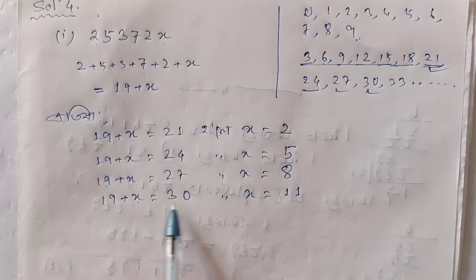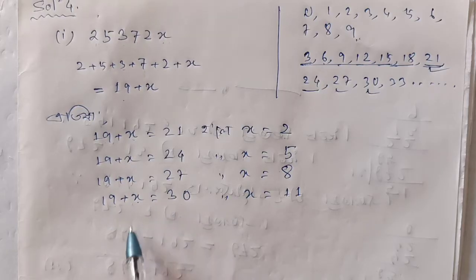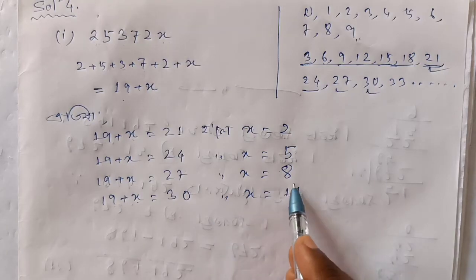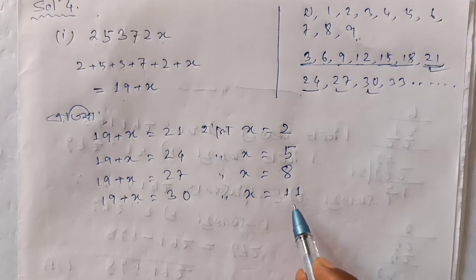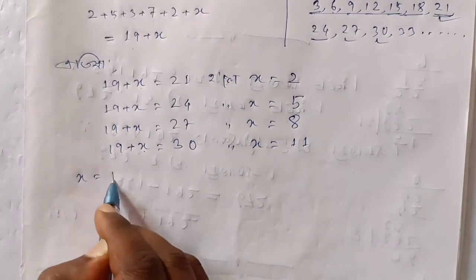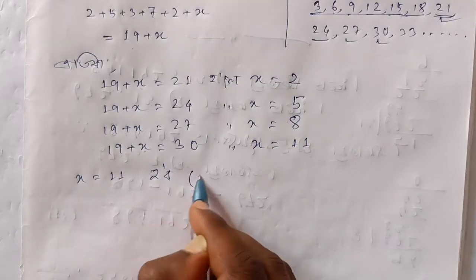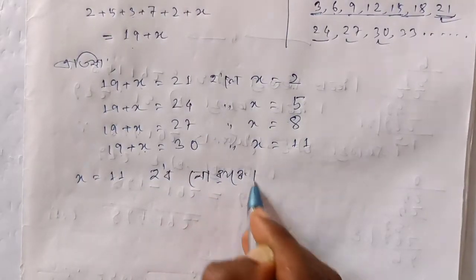13 plus x equals 30. Let me write it out: 13.